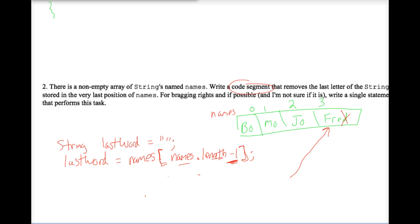Maybe you have like lastWord = lastWord.substring something comma something. So to pull the D off, we need to start at zero, and then you fill in this blank right here.